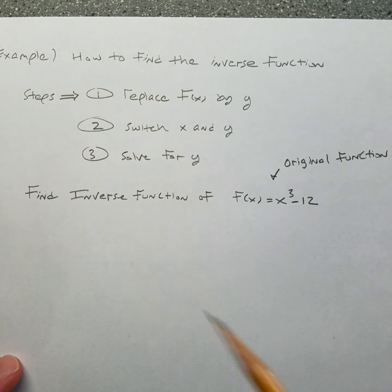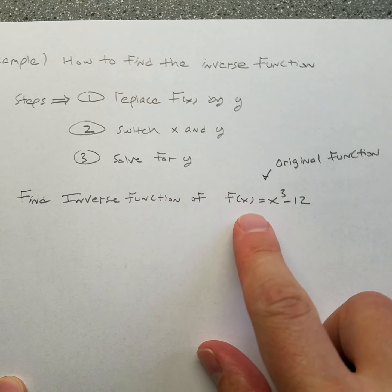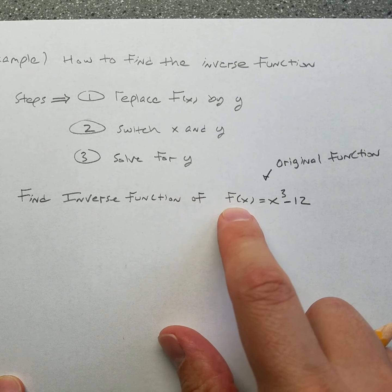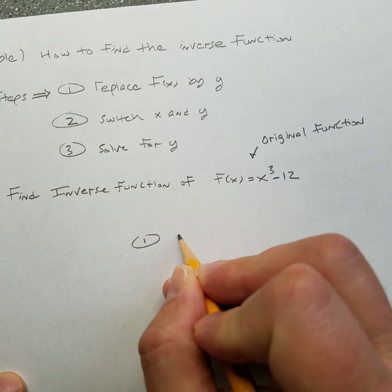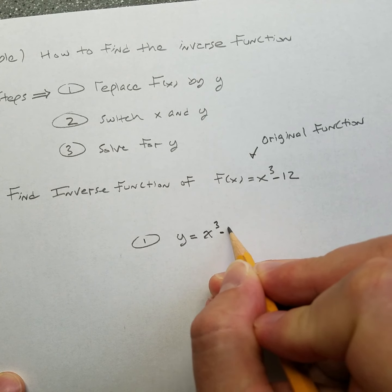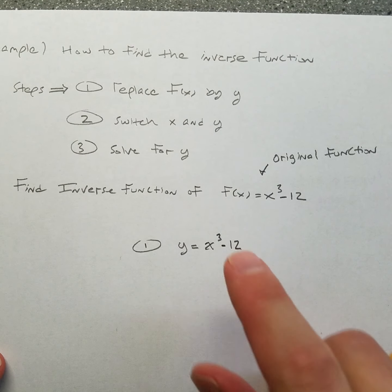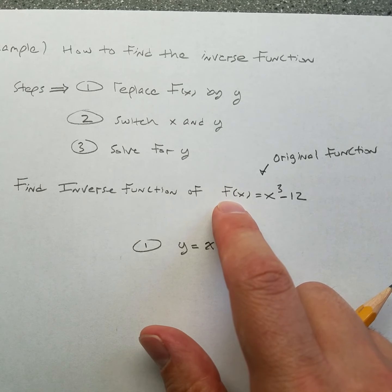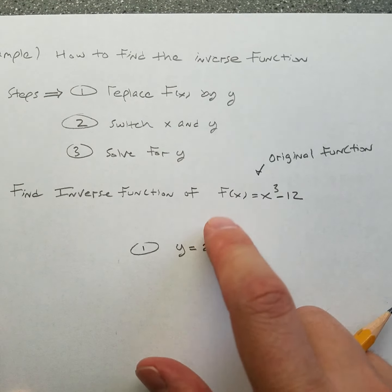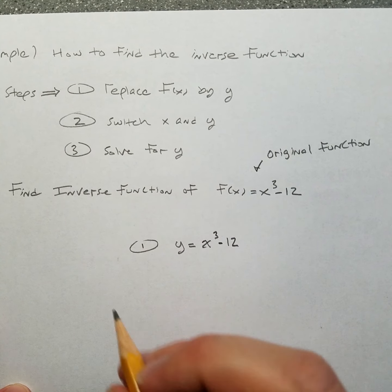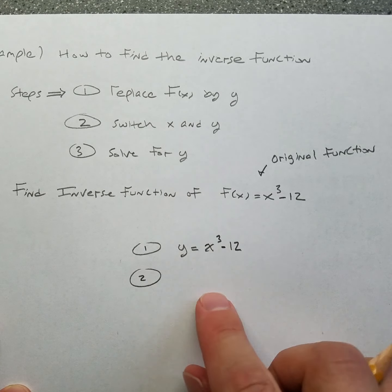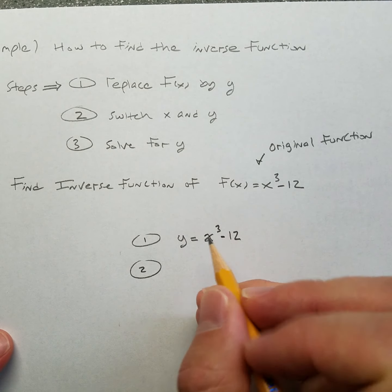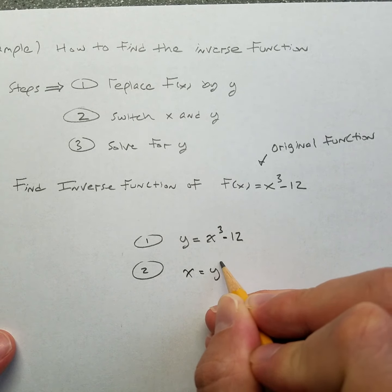Say I have this original function and I want to find the inverse. Step one: replace the function notation f(x) with the symbol y, since all f(x) does is stand in for y — it just makes it a little easier to look at. Step two: switch the x and the y. Where there was a y, put an x, and where there was an x, put a y. So this becomes x equals y to the third power minus 12.